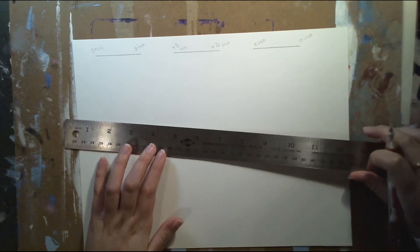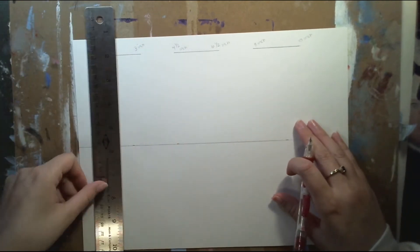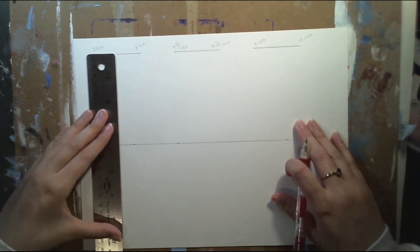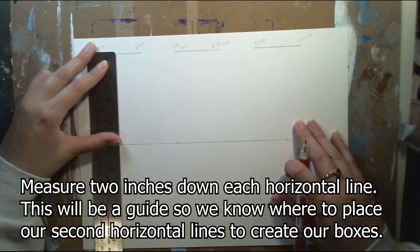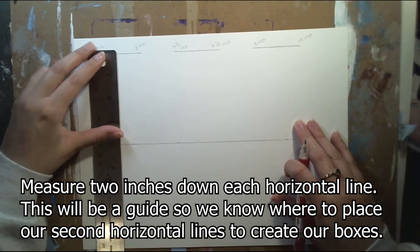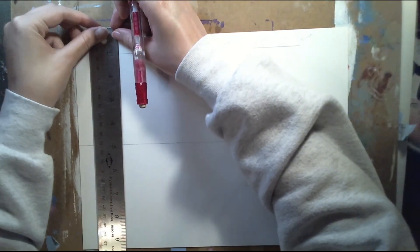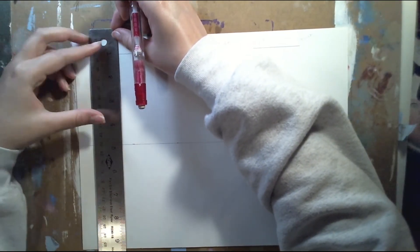My next step is I'm going to draw a vertical line from the line I just drew two inches down and this is gonna help us and be used as a guide so we know where to draw our second horizontal line which is gonna be the bottom of our box.